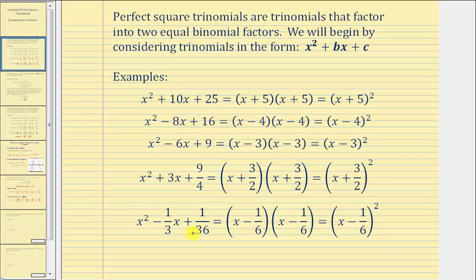Here are five examples of perfect squared trinomials. Notice how these trinomials in factored form are equal to the product of two equal binomial factors, which we can write as a binomial squared. This is the reason why these are considered perfect squared trinomials.